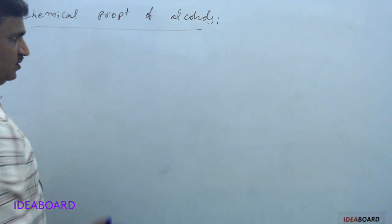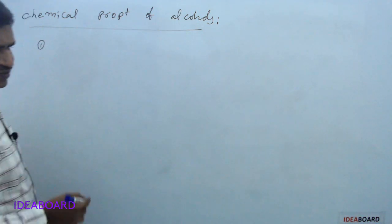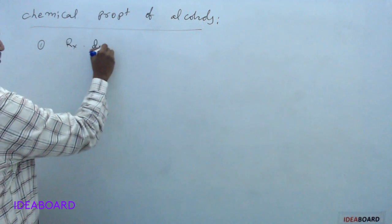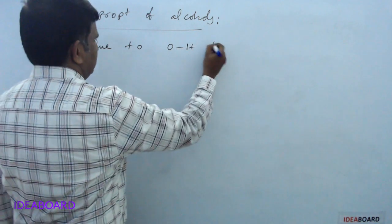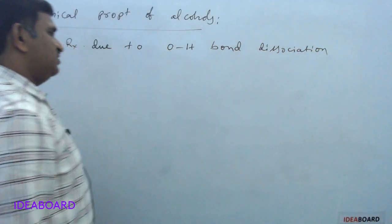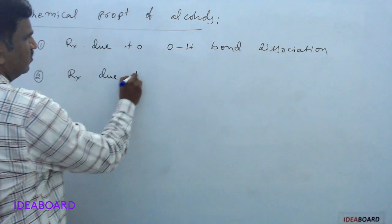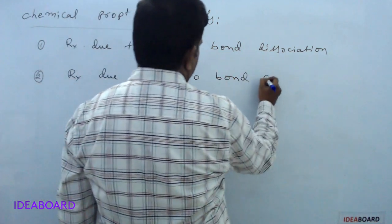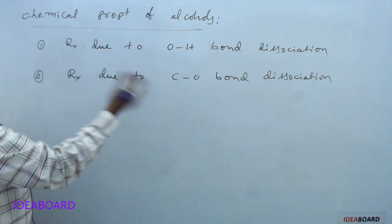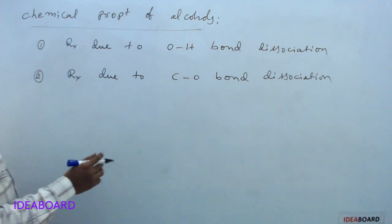Now, chemical properties of alcohols: alcohols undergo mainly three types of reactions. The first type is reactions due to OH bond dissociation. The second type is reactions due to CO bond dissociation. The third type involves other reactions involving the alkyl group only or the complete molecule.